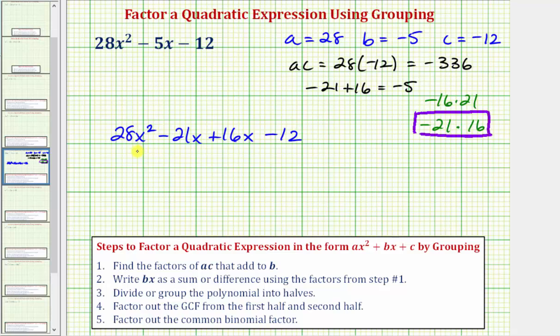In order to apply the factor by grouping technique, which is outlined in the next three steps, we do have to have an even number of terms, which we now have. So step three, we divide the polynomial into halves. Because we have four terms, the first half would be the first two terms. The second half would be the second two terms.